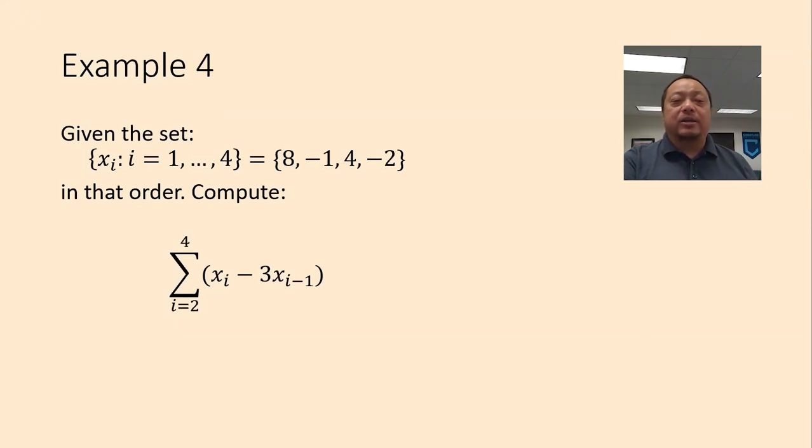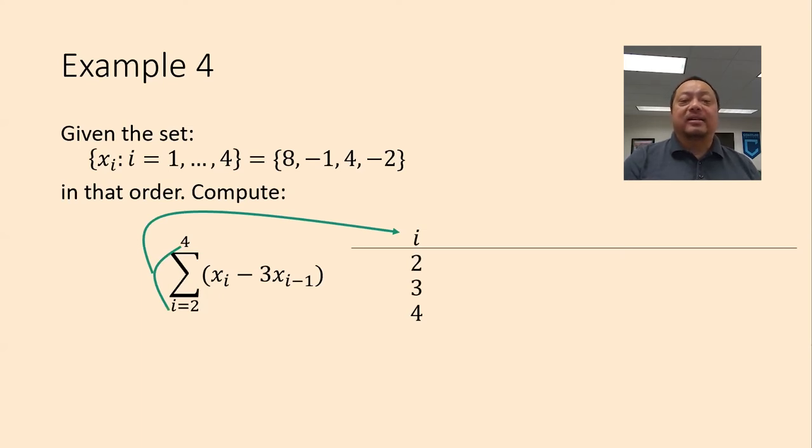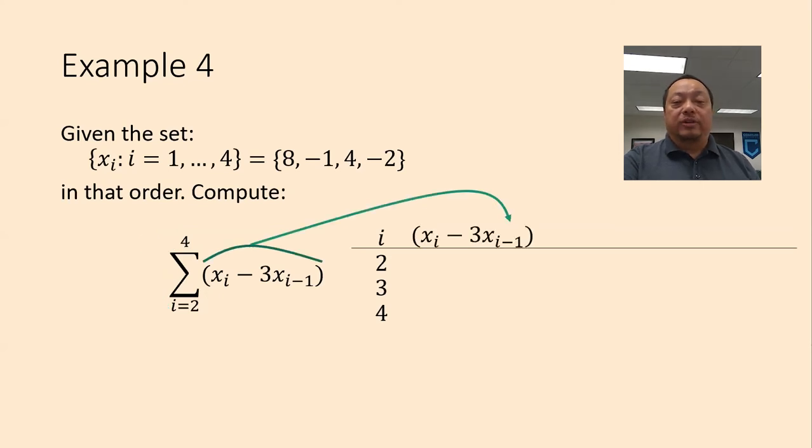Example 4. Using the same set of x sub i, compute the sum i from 2 to 4 of x sub i minus 3 times x sub i minus 1, where all the i minus 1 is in the subscript. Same as before, make a table, first the indices i from 2 to 4. Then the terms of the sum go here. It's just like the previous example, just with a mix of x sub i and x sub i minus 1. Let's plug in, for i equals 2, x sub i is x sub 2, continue, minus 3 times, 3 times what? 3 times x sub i minus 1, and since i equals 2, it's 2 minus 1 in the subscript. 2 minus 1 equals 1, we end up with x sub 2 minus 3 times x sub 1. Done with the first line. Do the same thing for the rest of the lines.